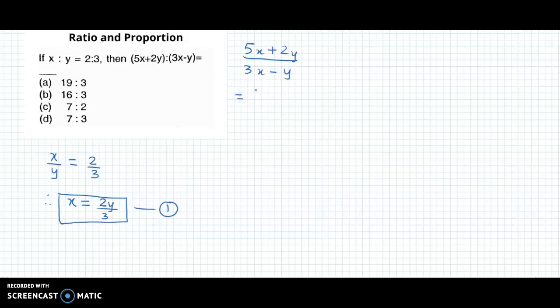This could be written as 5 times x, but x is 2y by 3, so we just plug in the value of x. So 5 times 2y by 3 plus 2y, divided by 3 times 2y by 3 minus y. Now we simplify the terms in the numerator.